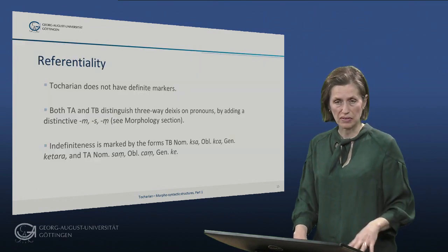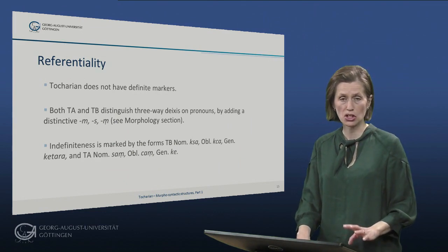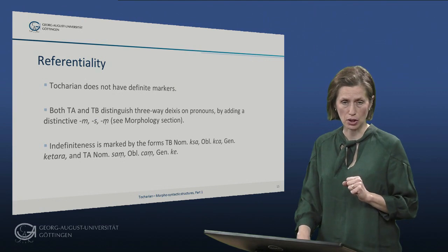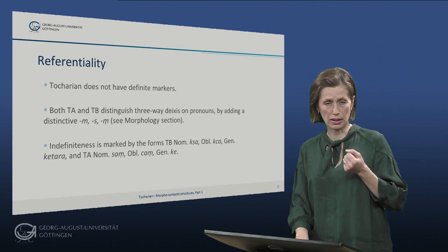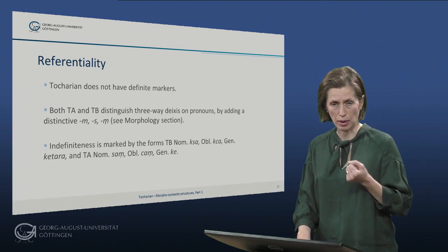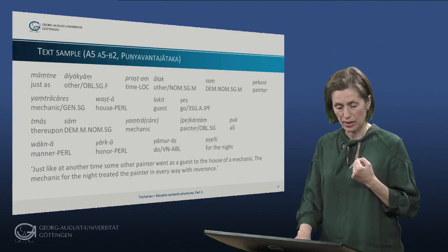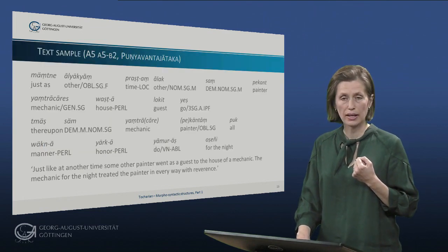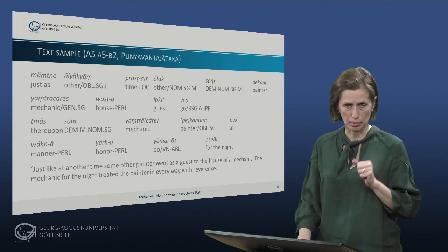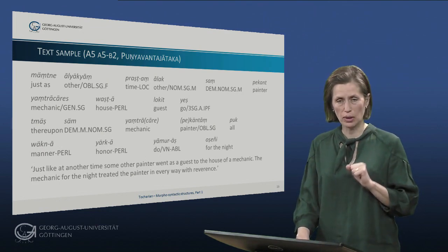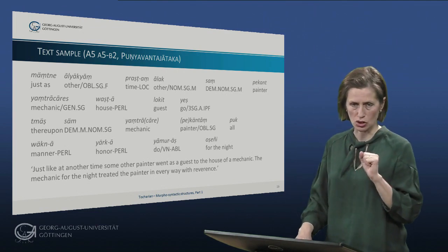Now let's move to referentiality. Tocharian is similar to most Indo-European languages in that it does not have definite markers. However, indefiniteness can be marked, and it is done by the indefinite pronoun xa. We will now look at the text of the mechanical doll that we examined briefly before, and consider specifically the usages of the case system.